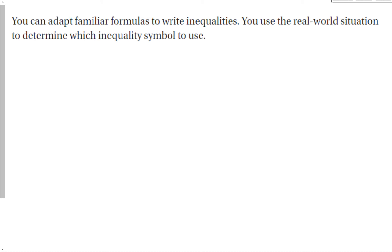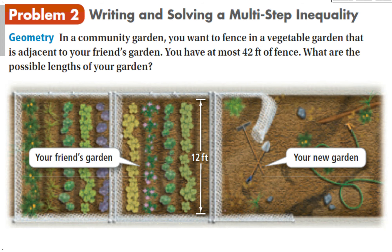You can adapt familiar formulas to write inequalities. We can use real-world situations to determine what inequality symbol to use. For instance, in this geometry problem: in a community garden, you want to fence in a vegetable garden adjacent to your friend's garden. You have at most 42 feet of fence. What are the possible lengths of your garden?